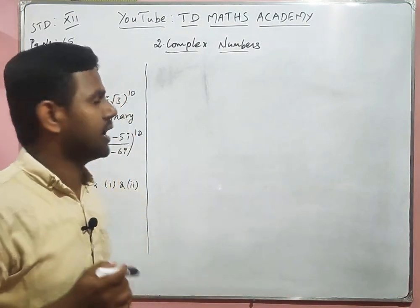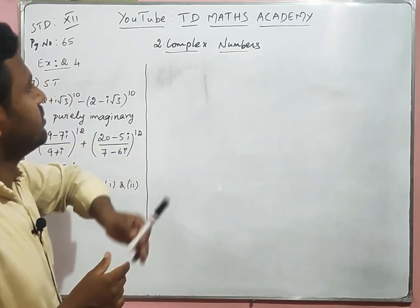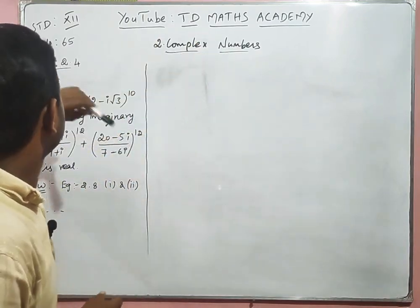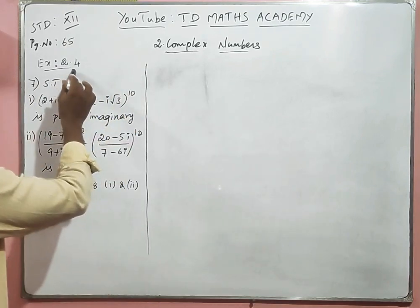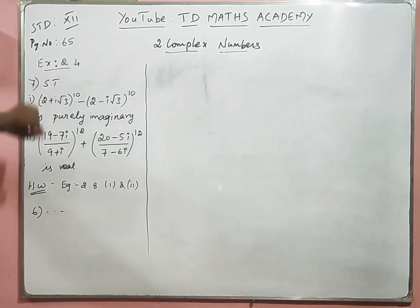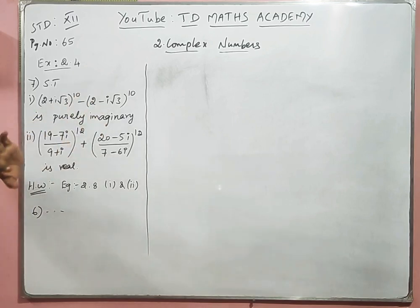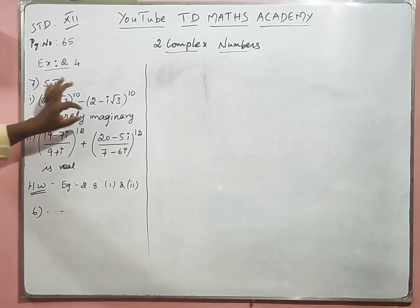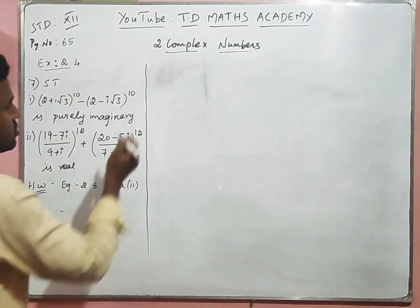Dear students, I am Tajdi. You are watching TD Max Academy YouTube channel. I am going to teach standard 12, second sector, complex number exercise 2.4, 7th sum. The question is: show that (2 + i√3)^10 − (2 − i√3)^10 is purely imaginary.